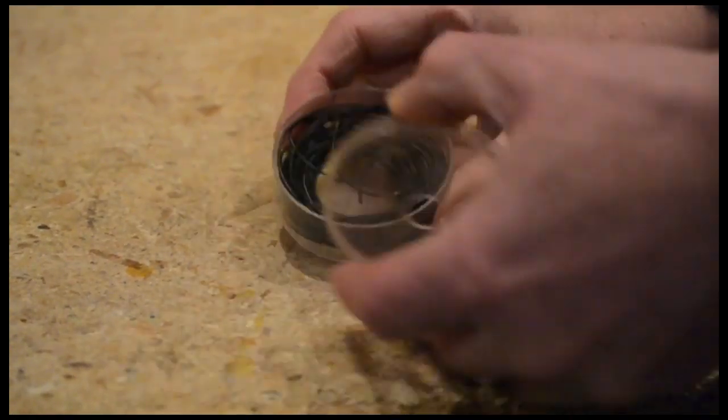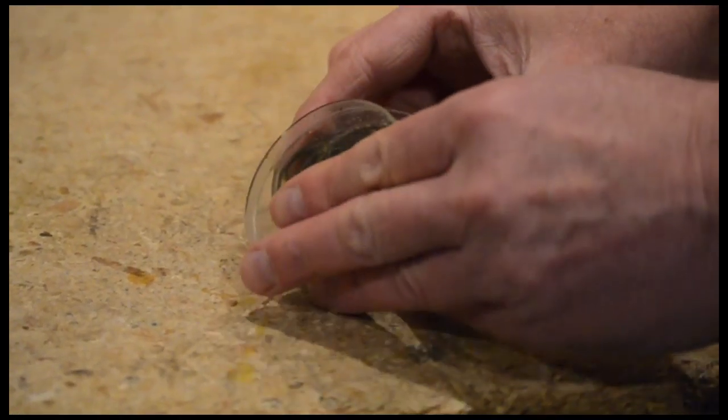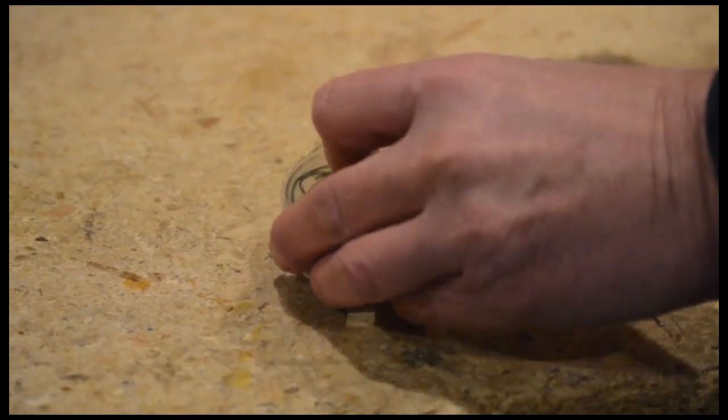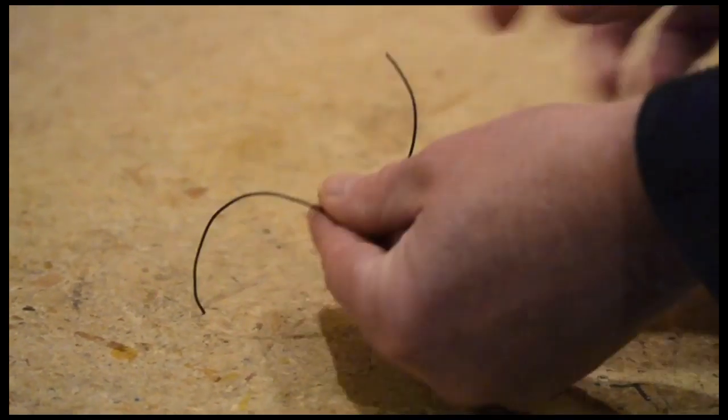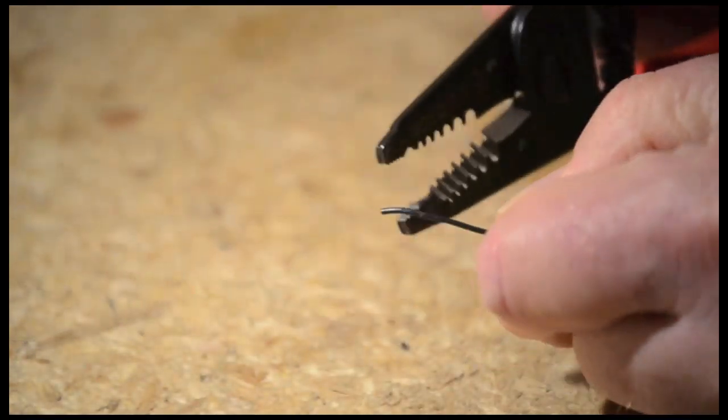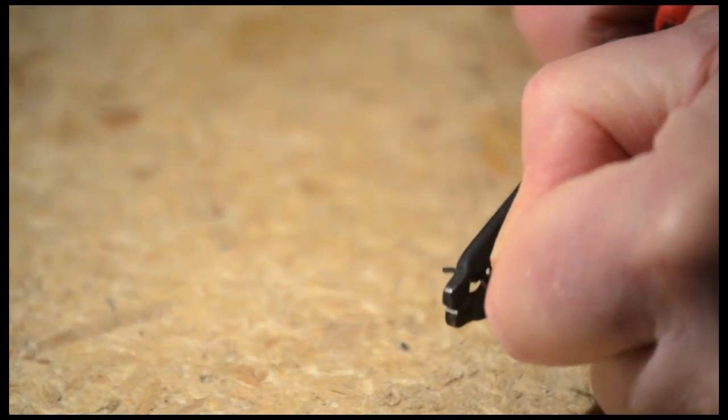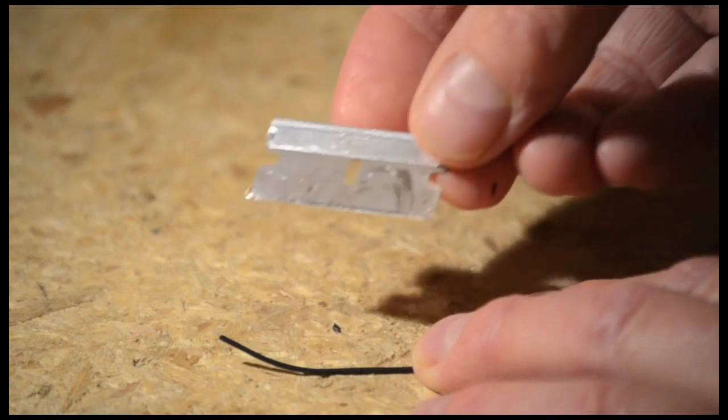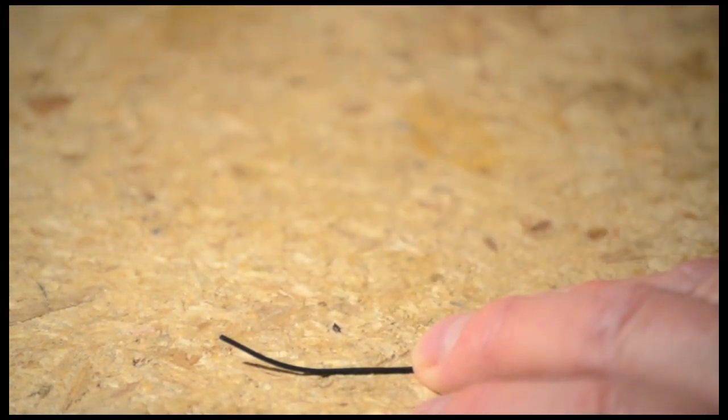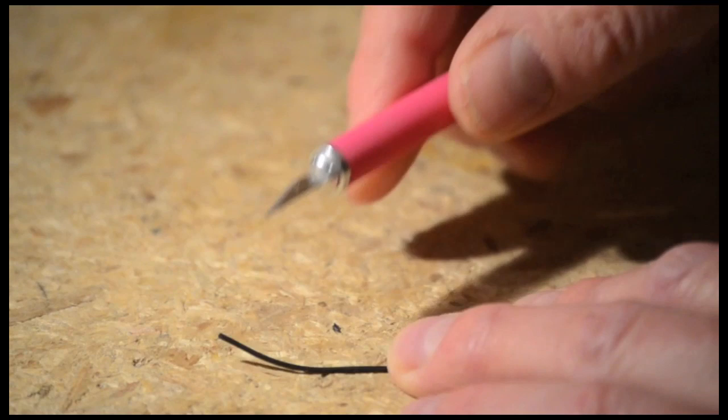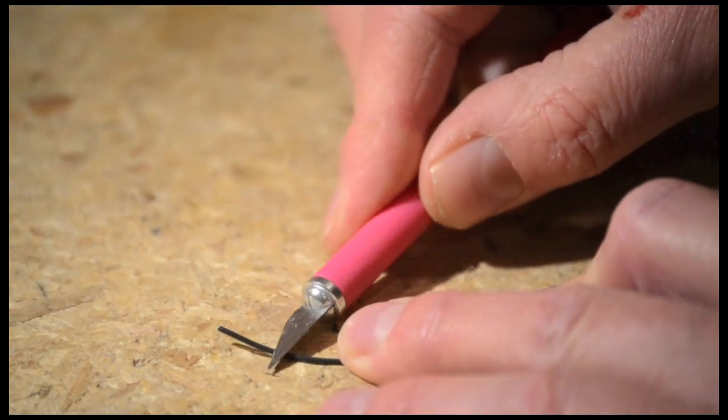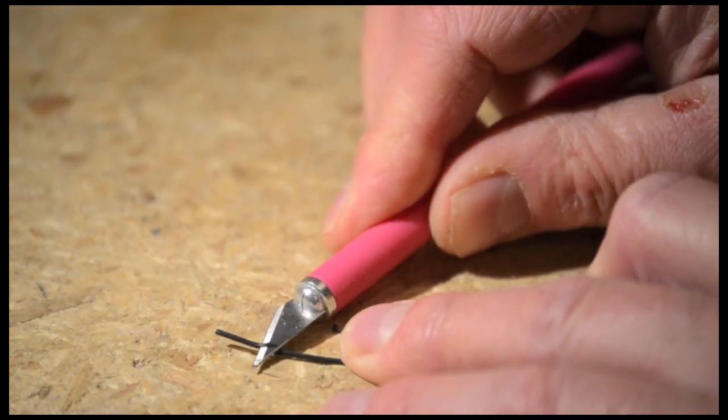Take two lengths of 22 AWG insulated wire and strip the insulation from both ends. You can use a wire stripper or you can use a single edge razor or a small craft knife. Always push the knife away from you.